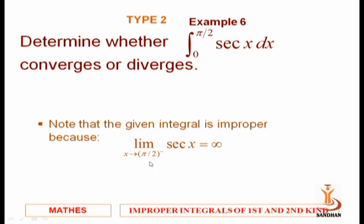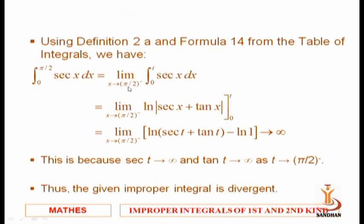Another example: the integral from 0 to π/2 of sec(x) dx. Putting x = π/2, sec(π/2) is not defined — it tends to infinity — so at x = π/2 the function is not defined. We consider the limit as t → (π/2)⁻ of the integral from 0 to t of sec(x) dx. Integrating gives [log|sec x + tan x|] from 0 to t. As t → π/2, this tends to infinity, so the integral is divergent.